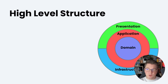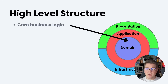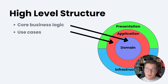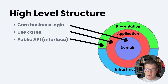Let's look at the high-level structure of the clean architecture. We have the core business logic sitting inside of the domain layer. The domain layer shouldn't have a reference to the other components or layers in the system, and it should be able to express the business logic on its own. Then we have the application layer, which contains the application's use cases and orchestrates the domain. We also have the presentation layer, which basically acts as an entry point into our system and contains the public API.